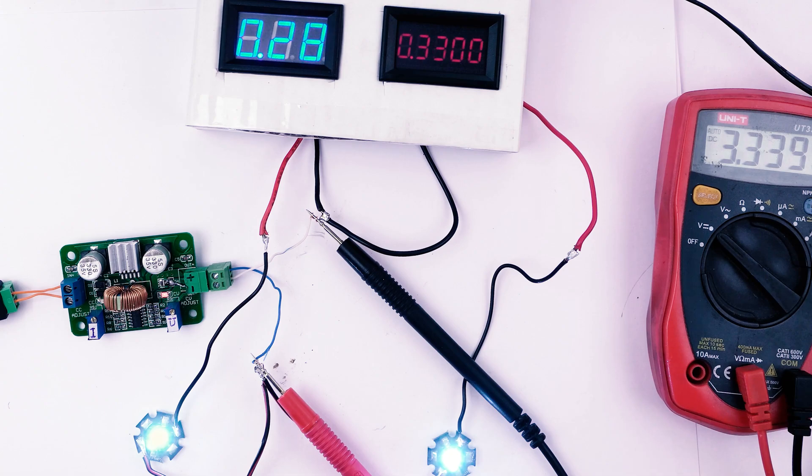However, this LED current is 280 mA, while this one's is 330 mA, and it's brighter. Why?